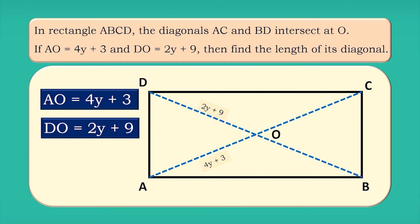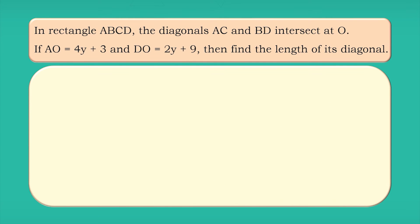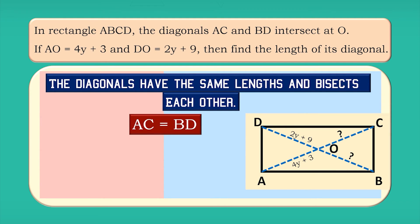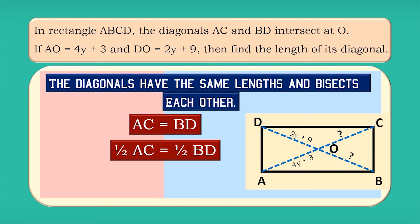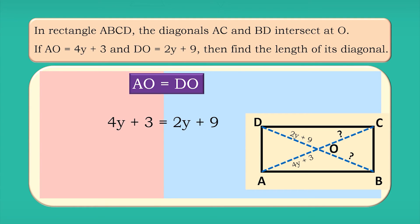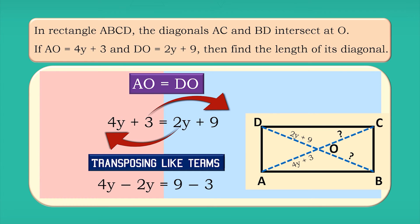We have to find the length of the diagonal. First, we compute the value of y. We know that in a rectangle, the diagonals have the same lengths and bisect each other, that is AC equals BD, so half of AC equals half of BD, that is AO equals DO. This means 4y + 3 equals 2y + 9. Transposing like terms, we get 4y − 2y = 9 − 3.